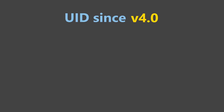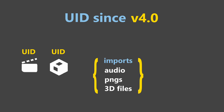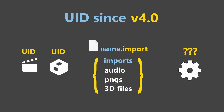Since Godot 4.0, scenes and resources already used UIDs invisibly in the header information of the scene and resource files. Imported files, like sprites or audio, got a special .import file associated with them which could track this UID for them. Scripts and shaders, however, are pure text files and never experienced the UID implementation.